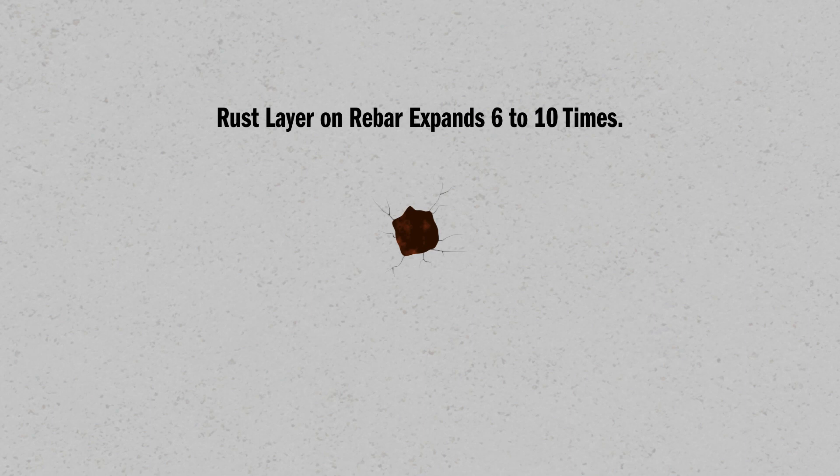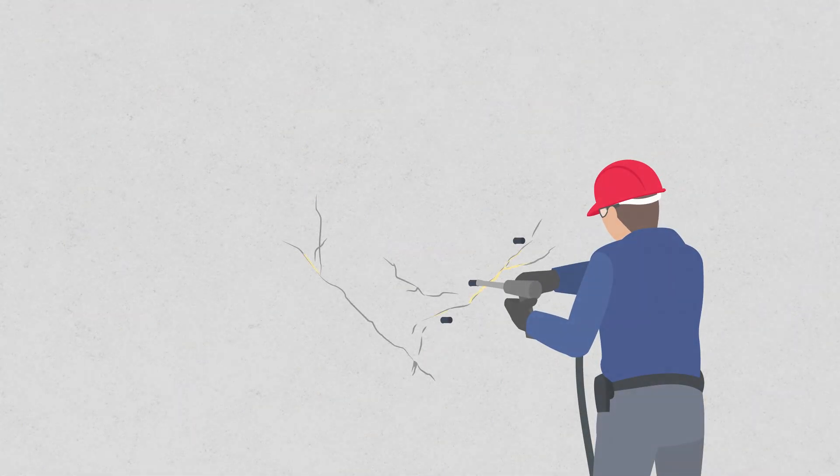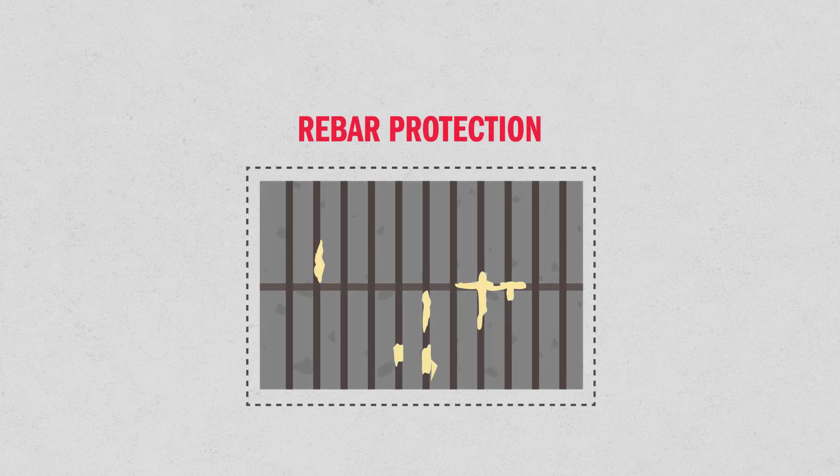This creates internal pressure on the concrete. While concrete is very strong in compression, it has low tensile strength and the expanding rebar will cause it to crack. By injecting polyurethane resin under pressure, we can encapsulate rebar and slow down the rebar corrosion process. This can greatly extend the life of the structure.